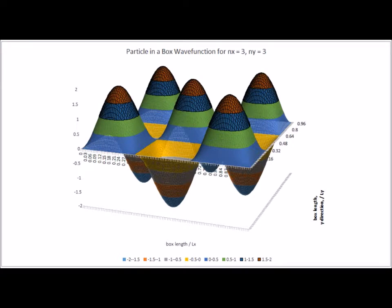Here, n sub x equals 3 and n sub y is also equal to 3. In each of the x and y directions, there are exactly two nodes.